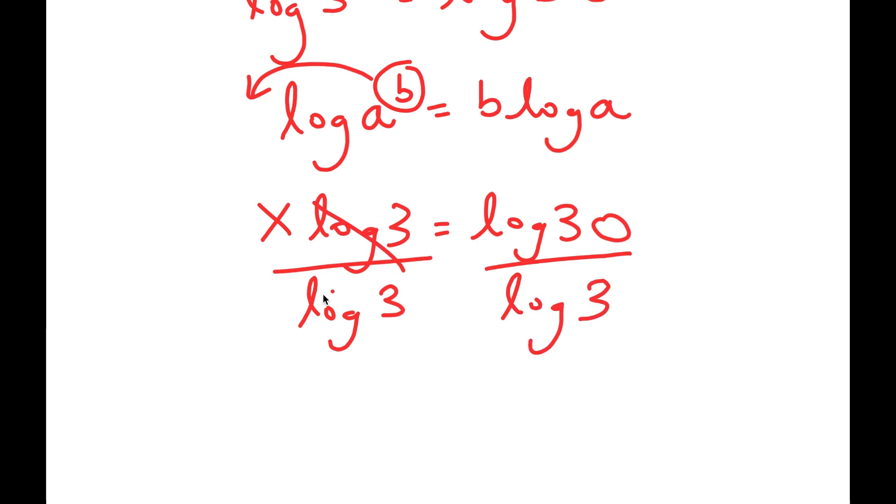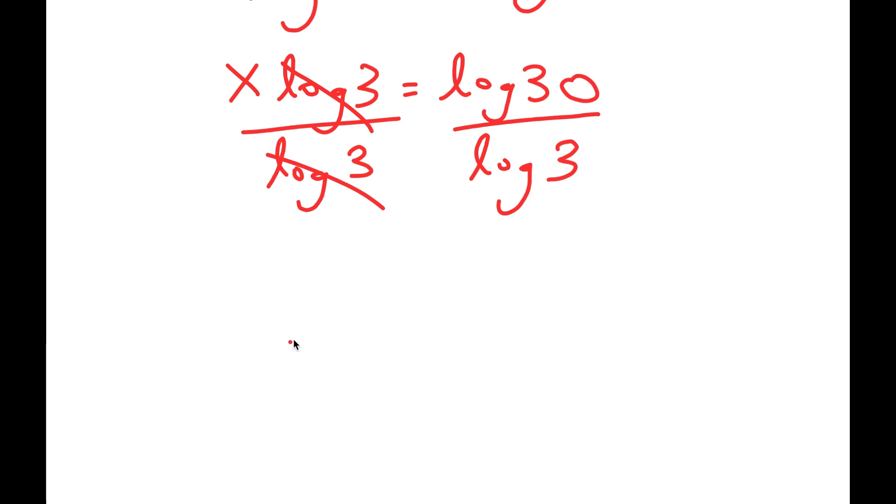So then these two cancel out, and I get x is equal to log 30 over log 3.